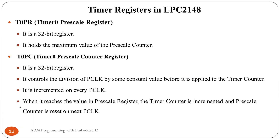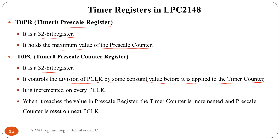The Timer 0 Prescaler Register is a 32-bit register that holds the maximum value of the prescaler counter. The Prescaler Counter Register controls the division of the peripheral clock by a constant value before it is applied to the timer counter. It increments on every peripheral clock, and when it reaches the prescaler register value, the timer counter is incremented and the prescaler counter is reset. To bypass the prescaler, set the prescaler register to zero.